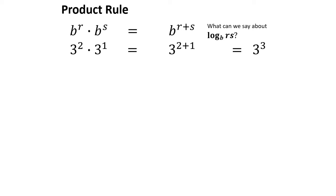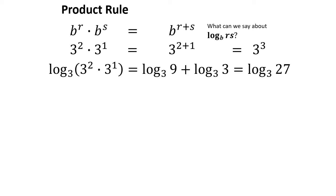Here's an example of the product rule working for logarithms. Log base 3 of 9 is 2, and log base 3 of 3 is 1. So we add 2 and 1 to get 3, which can also be written as log base 3 of 27.